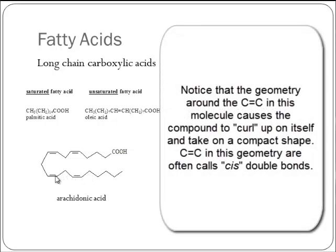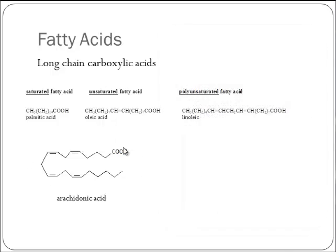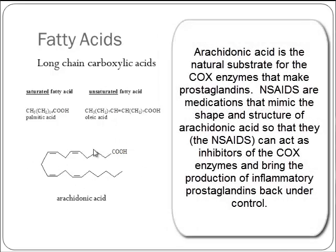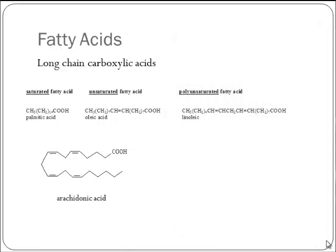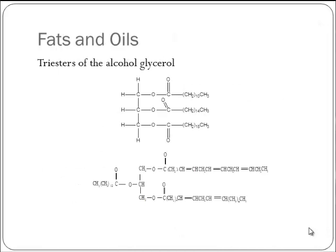Each of those double bonds is in a specific cis geometry, so the molecule curls up on itself. Toward the end of the course we'll take another look at this, because arachidonic acid is the molecule that fits into enzymes that make prostaglandins — and it's the molecule that all NSAIDs are trying to mimic so they can fit into that enzyme and either shut it down or change its action. Fats and oils are made out of those fatty acids.